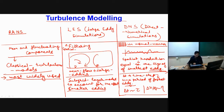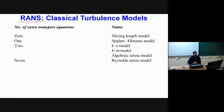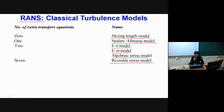For RANS, we have mean flow plus fluctuating components called Reynolds stresses. To determine these Reynolds stresses, we require classical turbulence models. Available models are: mixing length model, Spalart-Allmaras model, k-epsilon model, k-omega model, algebraic stress model, and Reynolds stress model (RSM). Mixing length and k-epsilon are the two most popular; RSM is used where these fail but is most computationally expensive.